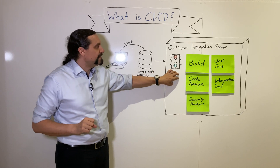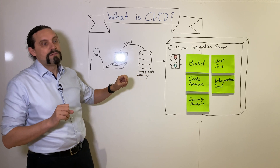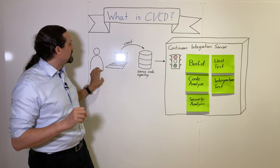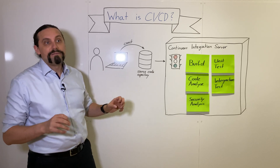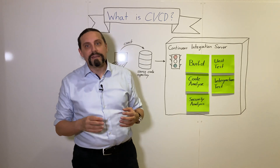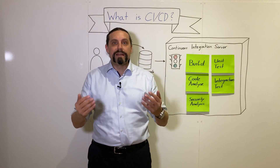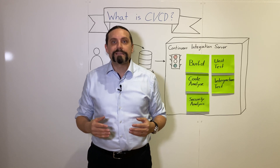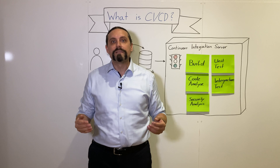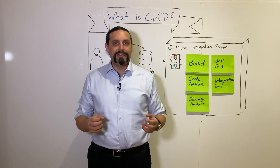If everything is green, the continuous integration server will give feedback back to the developer that everything was okay and his code has been integrated with the rest of the code. From there we can go into the next step, which is continuous delivery or continuous deployment, and we will have a look at that in the next video.